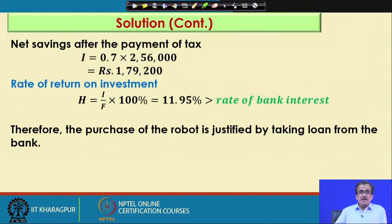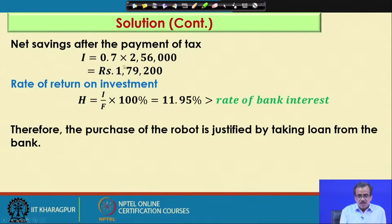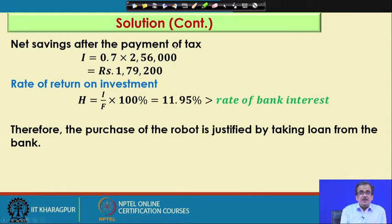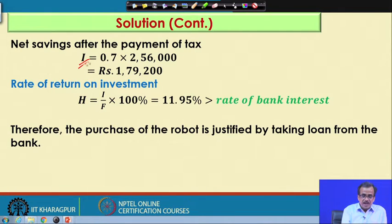Next, we try to find out what should be the rate of return on investment. As I told, 30 percent of the net saving we have paid as tax. So, the remaining amount — the net saving after the payment of tax — is denoted by I. So, I is nothing but 70 percent of rupees 2,56,000, that is nothing but rupees 1,79,200.